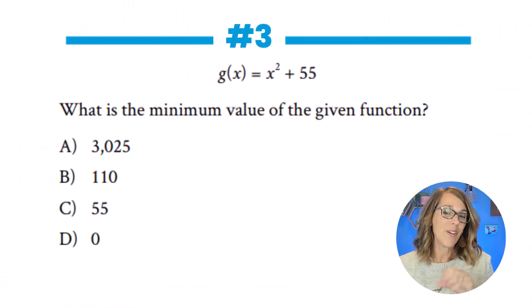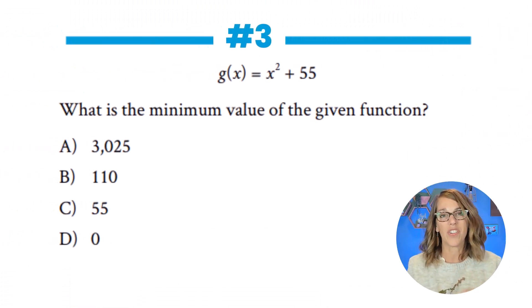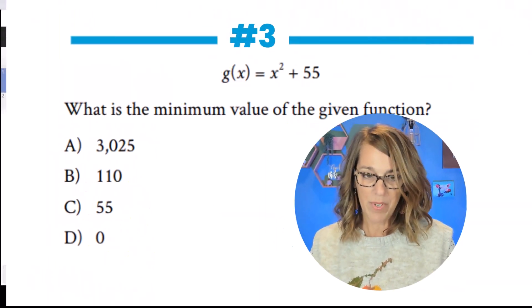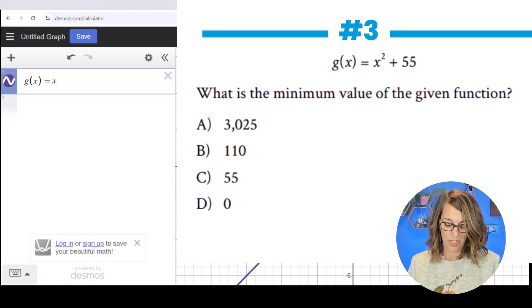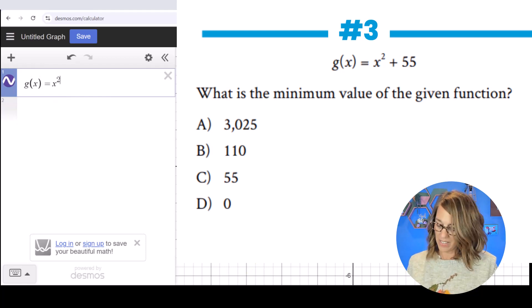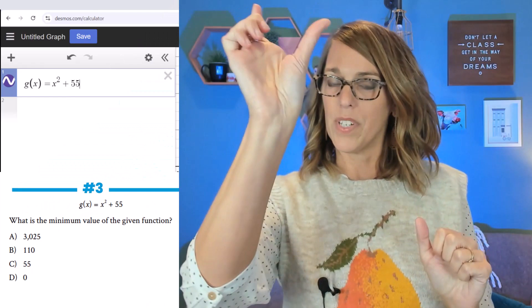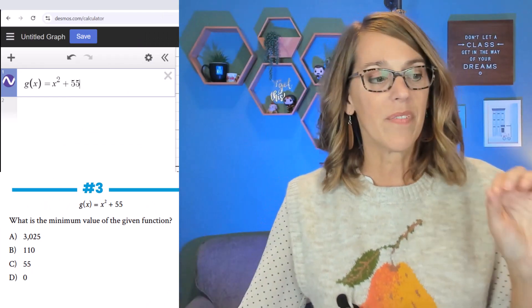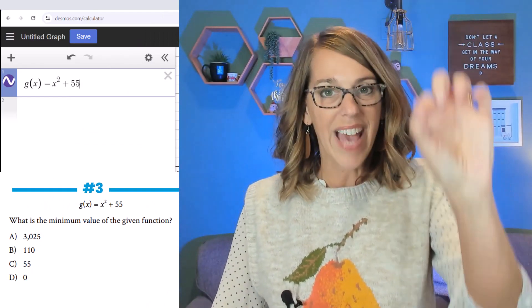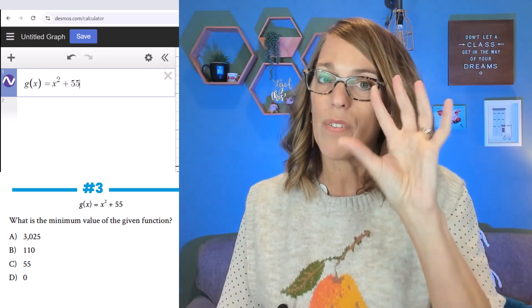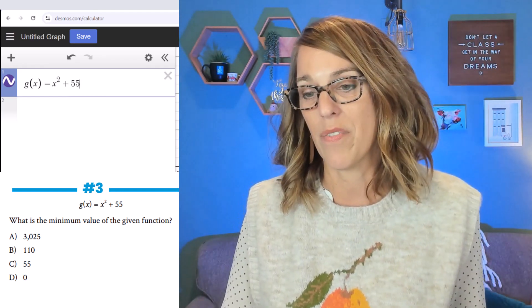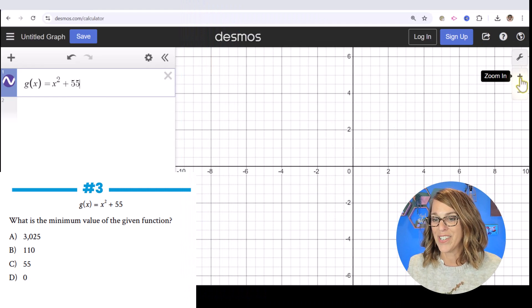Here we go with number three. I'm given a function to type into Desmos. I'm going to start by typing in g(x) = x² + 55. This problem has been shifted way up, but I want to find the minimum value — that's going to be my vertex. You could use a formula like negative b over 2a, but I'm not going to.